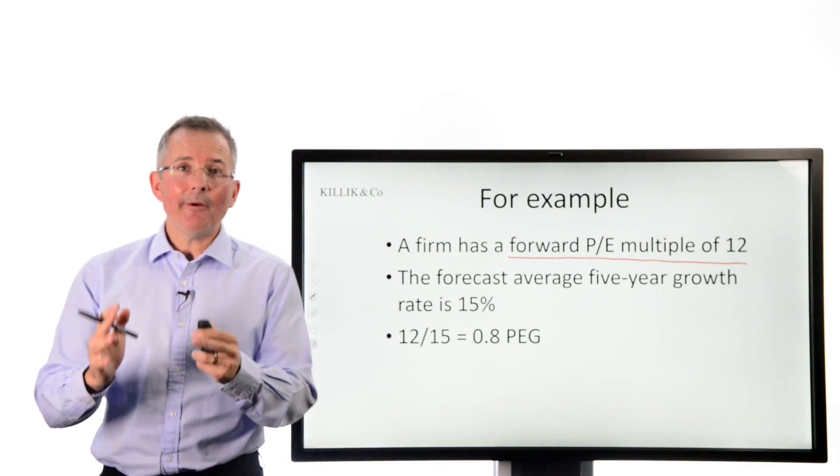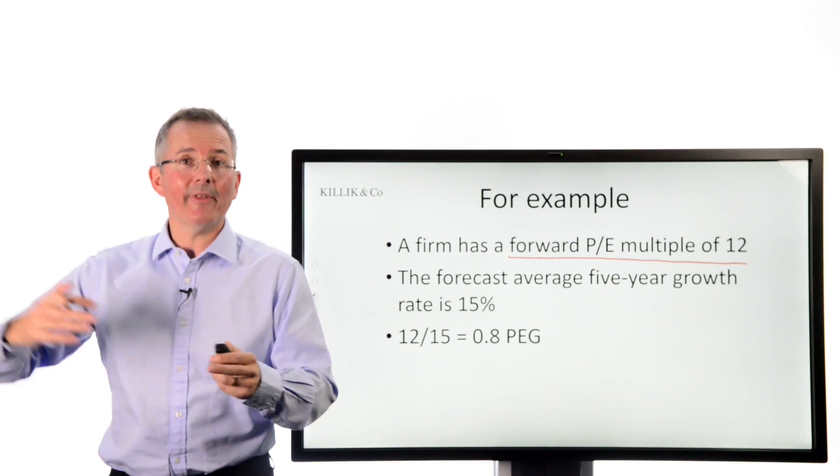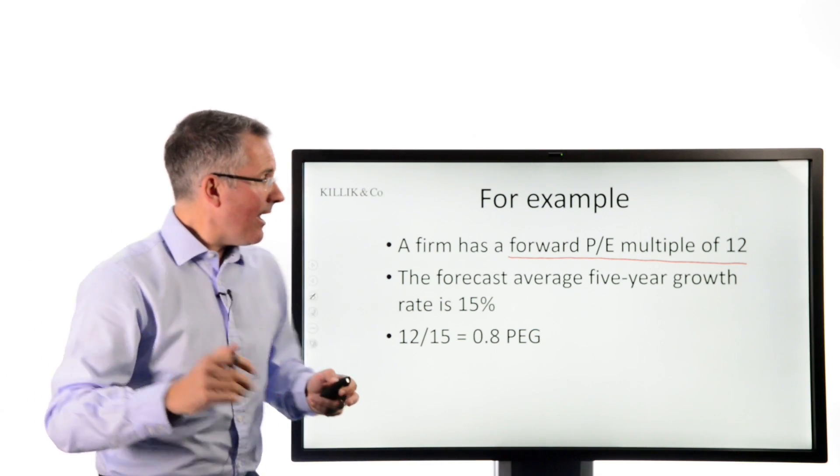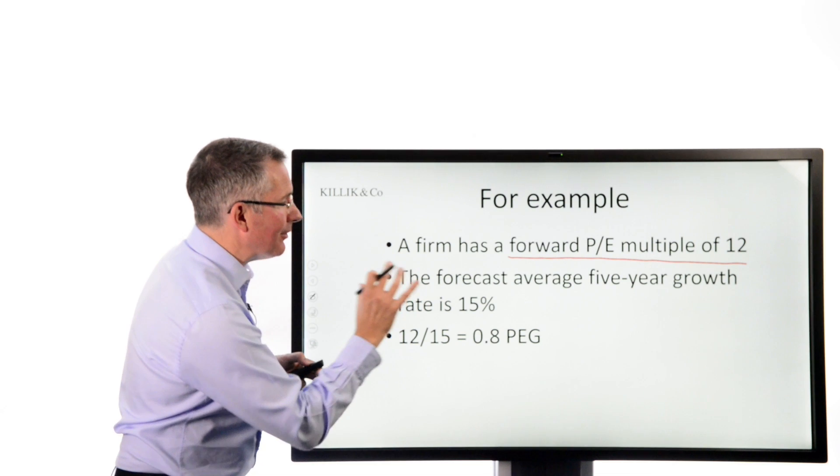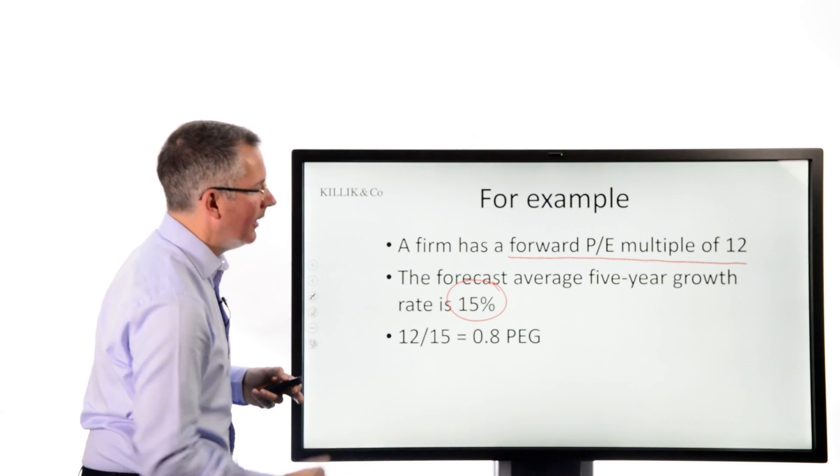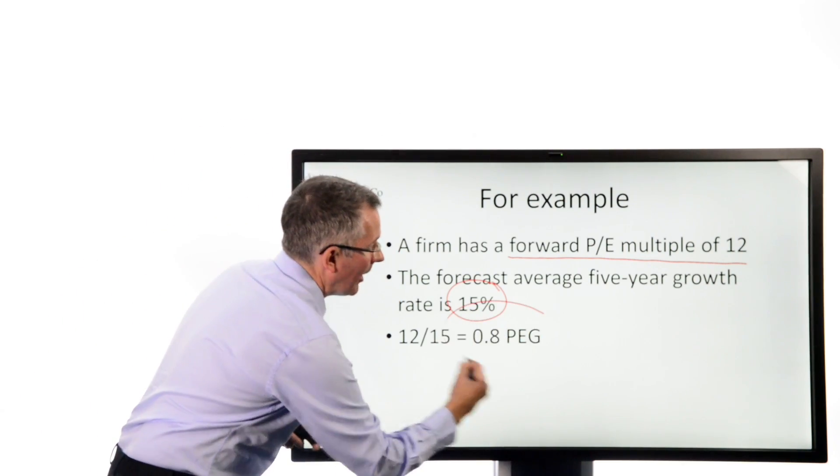What earnings are we going to use? Where it's available, a lot of people like to use a three- or five-year earnings forecast, and they average it out to get a sort of one-year number. So if we had a forecast average five-year growth rate of 15%, the PEG is simply one over the other, ignoring the mathematical oddity there, i.e. 0.8.